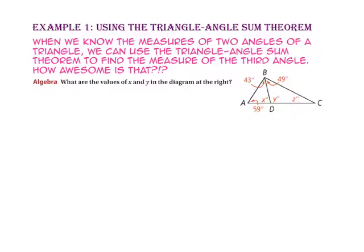In example one, we will use the triangle angle sum theorem. When we know the measure of two angles of a triangle, we can use the triangle angle sum theorem to find the measure of that third angle. Looking at triangle ABD, we know the measure of angle A is 59 degrees, the measure of angle ABD is 43 degrees, and we're looking for the measure of angle BDA. Since this is a triangle, 59 plus 43 plus X will equal 180.